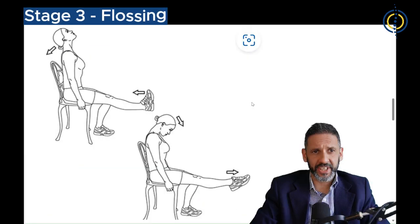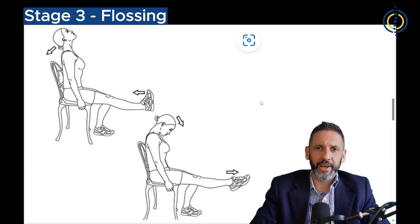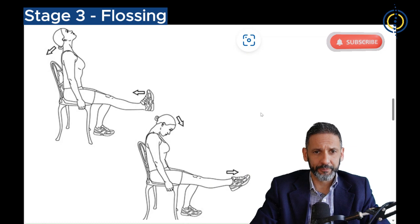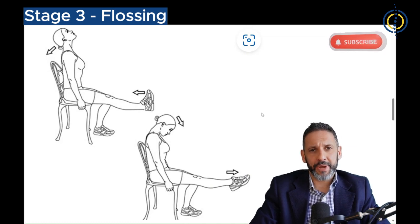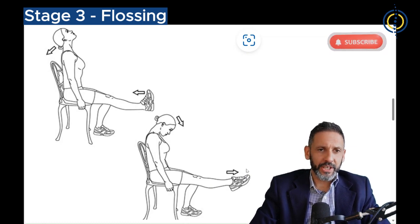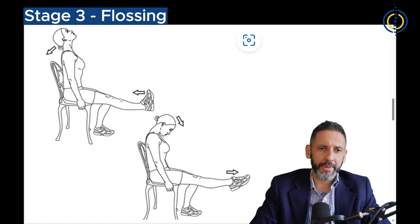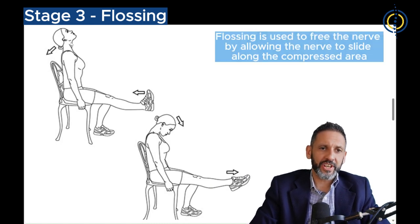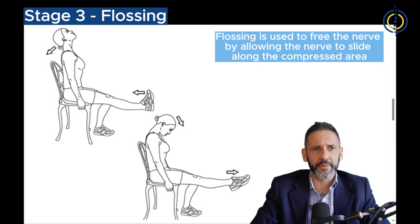The next stage of treatment is called flossing, if the pain is still there. This can actually be done in parallel with the manual therapy described in stage two, but it depends on how much pain you're in. This treatment is taught to you by a physiotherapist or sometimes an osteopath, where these stretches try to loosen the nerve, help it slide around that point of compression at the disc, and also give it some slack — and that can help alleviate the pain radiating down the leg.